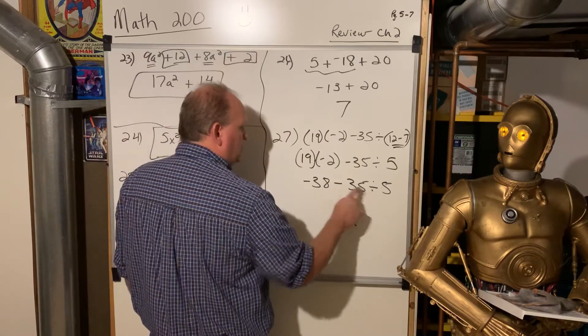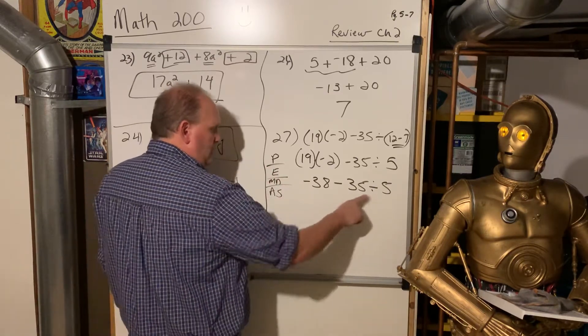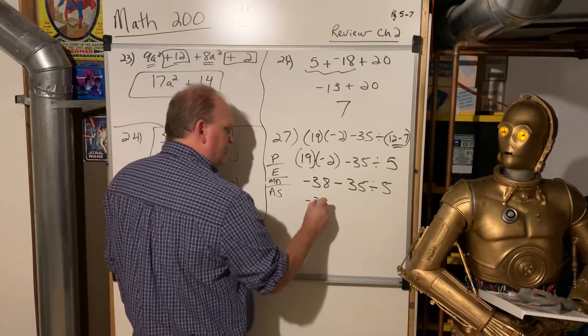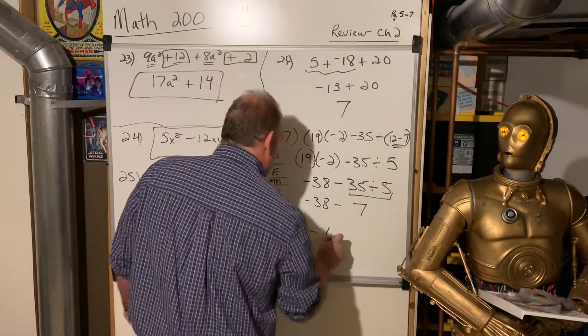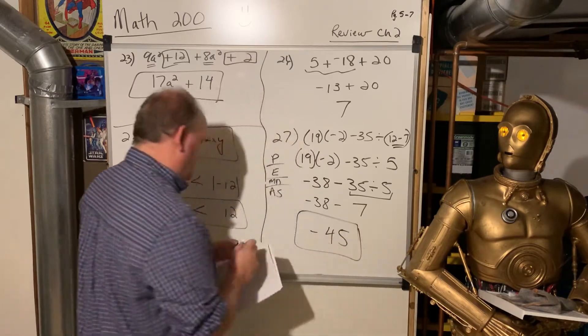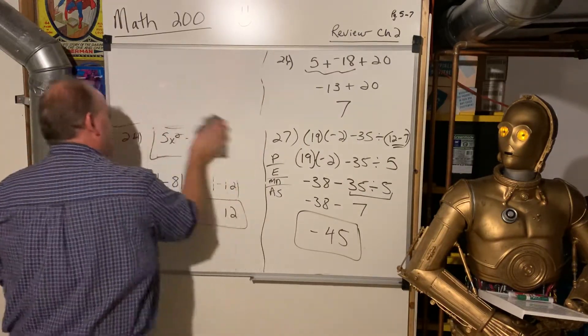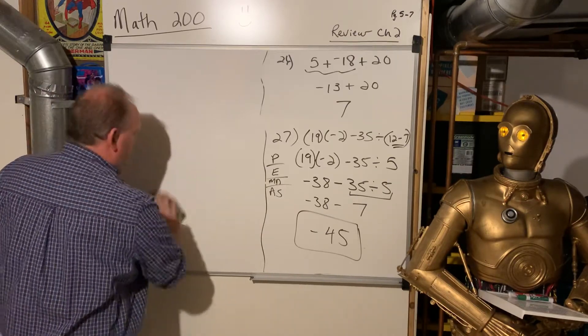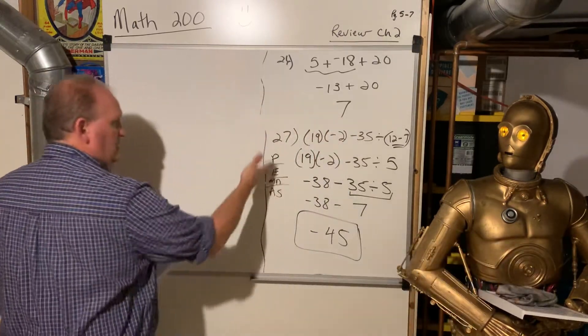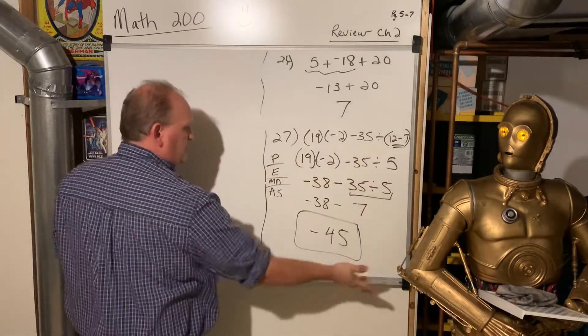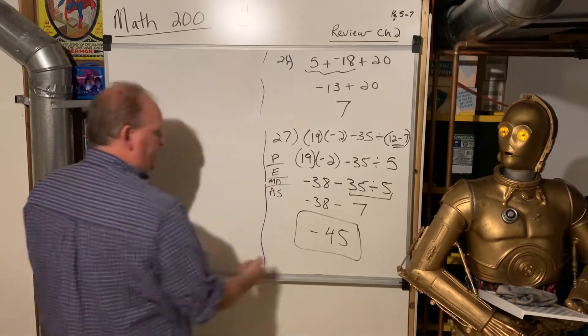Now, even though the minus is written first, we're doing order of operations. Please excuse my dear Aunt Sally. So we are going to divide before we add or subtract. And now we got a negative 38 and a negative 7. That's a negative 45. So that's a tricky one. You've got to kind of fight the urge to just go left to right. The only time you're going left to right is if it's a tie between, like, addition and subtraction or between multiplication and division. Otherwise, you follow this order. Parentheses first. Exponents next. There were no exponents anywhere. Multiply, divide. So we did the multiplication. Then we did the division. And then add subtraction last.